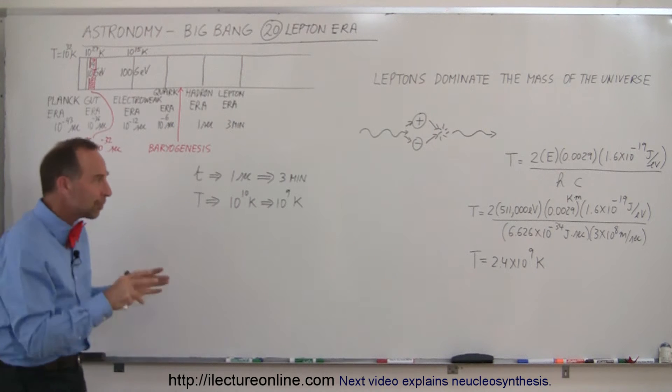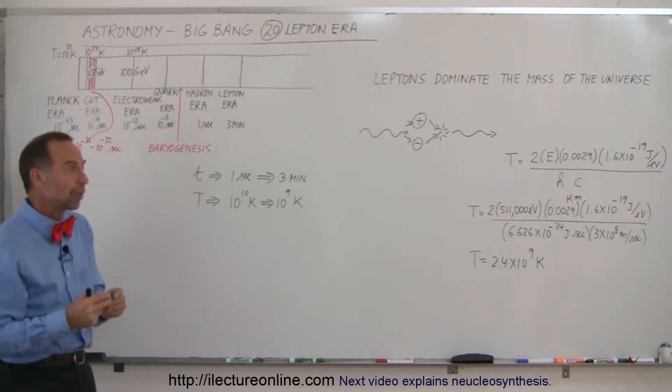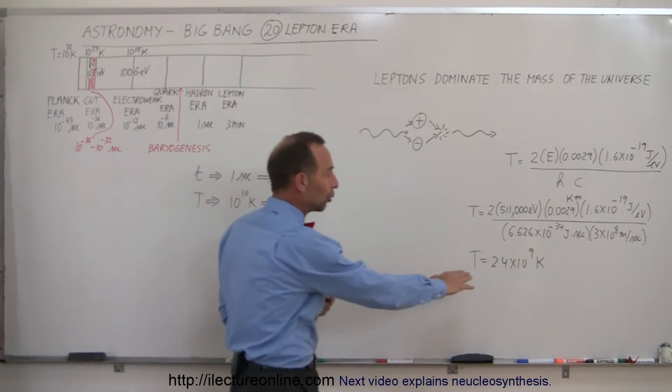But the smaller particles, leptons, such as electrons, they were still being produced at a furious rate because they're much smaller in mass. They require much lower temperature in order to be formed.